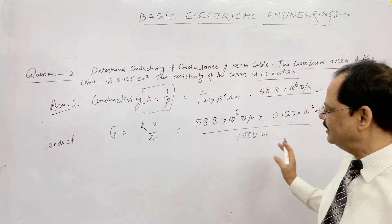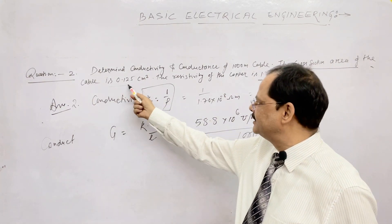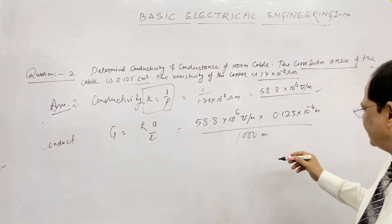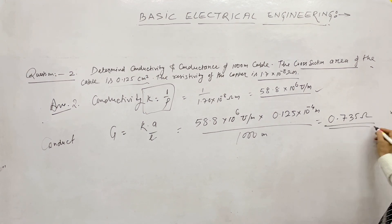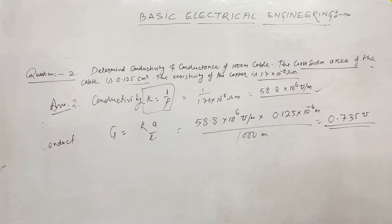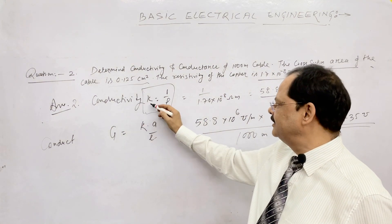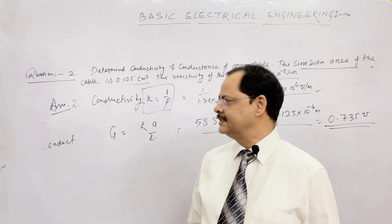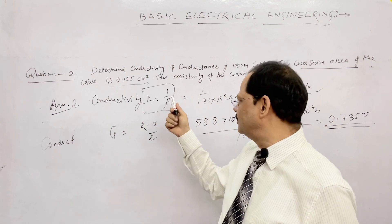Always remember to convert centimeters to meters before substituting. Solving this, the conductance G comes out to 0.735 mho. So conductivity is 58.8 × 10⁶ mho/m and conductance is 0.735 mho.